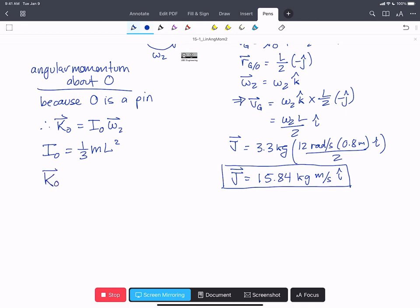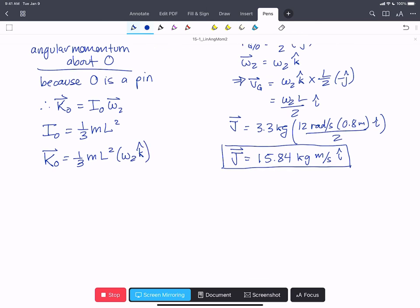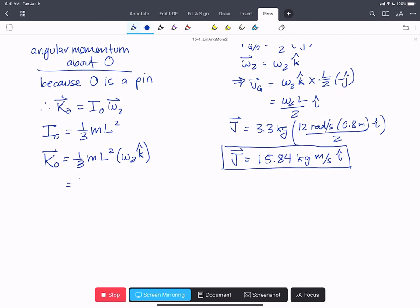And therefore, we can say that K_O, the angular momentum about O, is one-third ML squared times omega 2 in the K hat direction. We'll put in our numbers: one-third times 3.3 kilograms times 0.8 meters squared times 12 radians per second in the K hat direction.